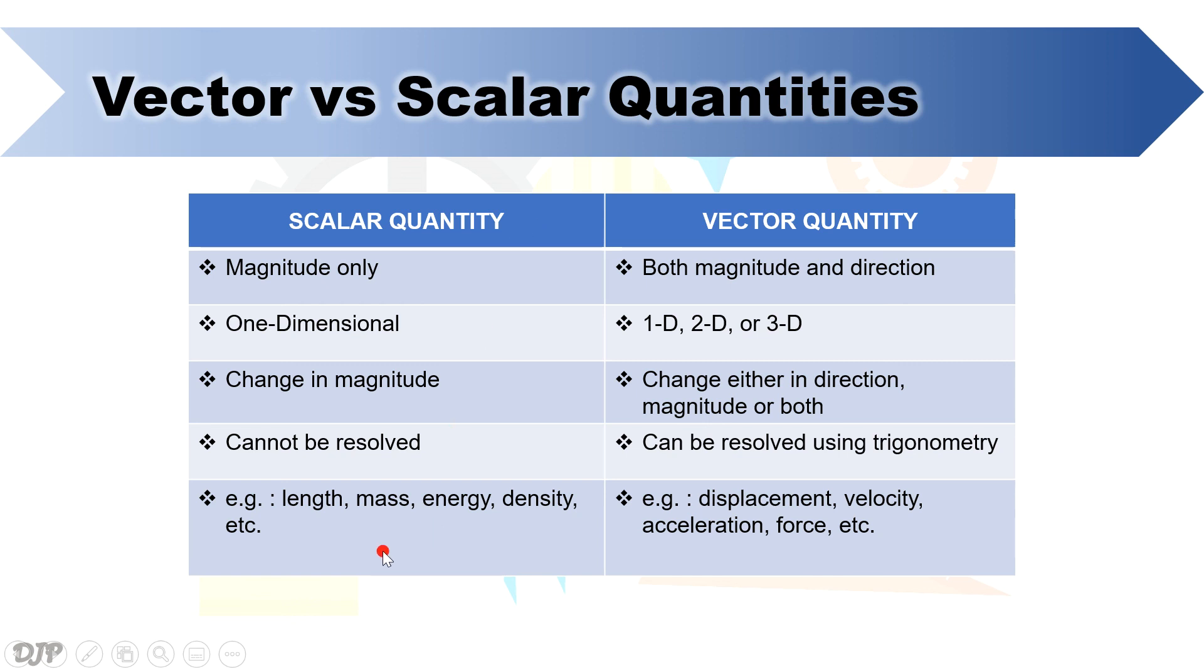Examples of scalar quantities are length, mass, energy, and density, which are all described only by magnitude, while common examples of vector quantities are displacement, velocity, acceleration, and force.